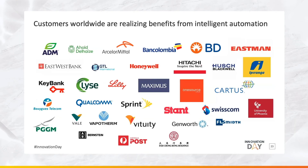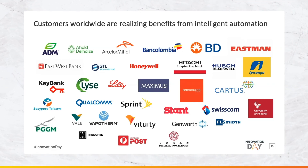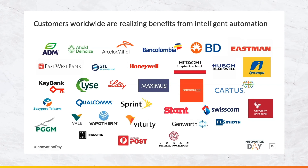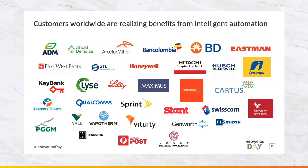Stanford's just one example. Some of the biggest names in the world are realizing the benefits of intelligent automation with us. What you'll notice is that these customers span different business functions, industries, and verticals inside their organizations.